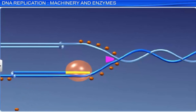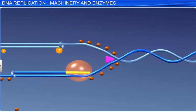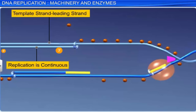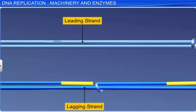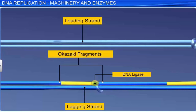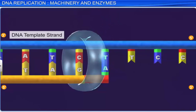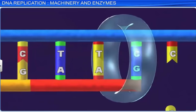However, there is a small catch. The DNA-dependent DNA polymerase enzyme can catalyze the replication reaction in only one direction: 5' to 3'. This causes additional complications. Replication on one template strand with 3' to 5' polarity, also known as the leading strand, is continuous. Whereas replication on the other template strand with 5' to 3' polarity, also referred to as the lagging strand, is discontinuous. These discontinuously replicated fragments, also known as Okazaki fragments, are then joined by the enzyme DNA ligase. Furthermore, cellular proofreading mechanisms ensure the fidelity of DNA replication.